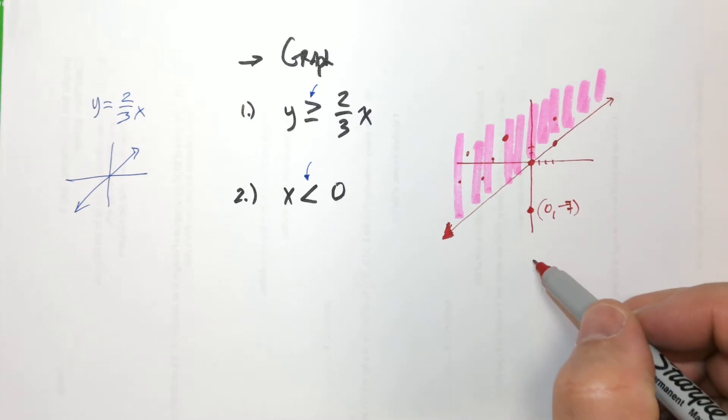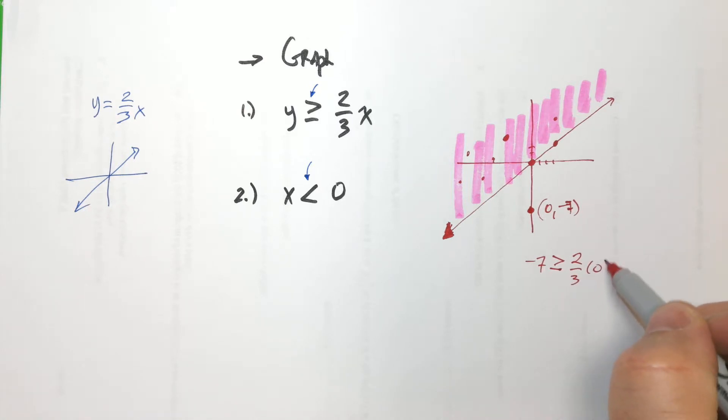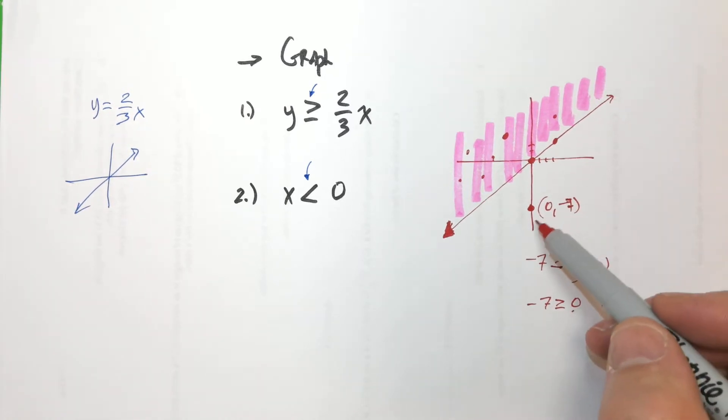If I plug that in, negative seven greater than or equal to two-thirds times zero. So is negative seven greater than or equal to zero? No. Zero is bigger than negative seven. So, like this is not an answer, and that's why it's not shaded.